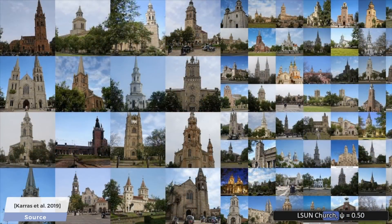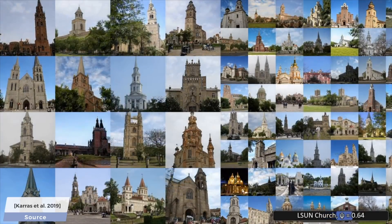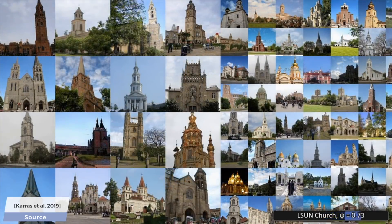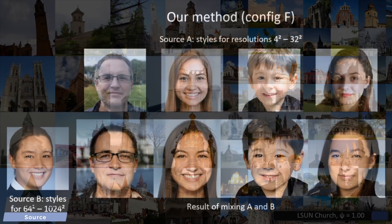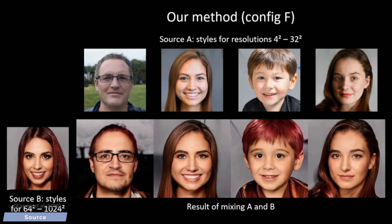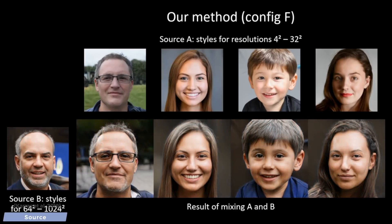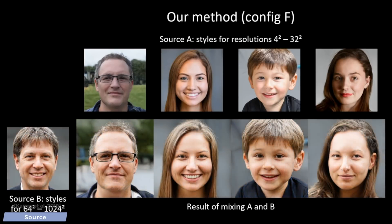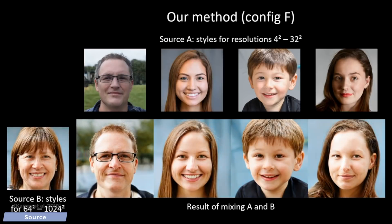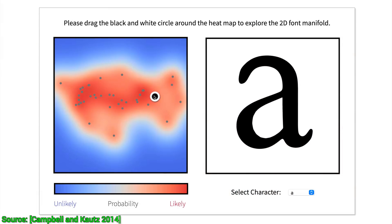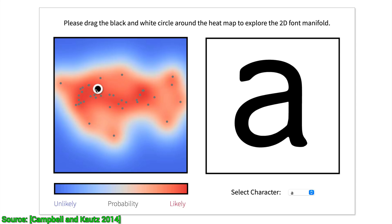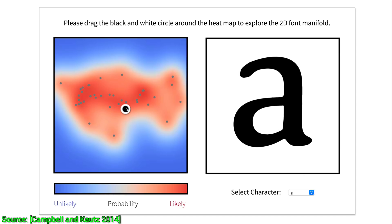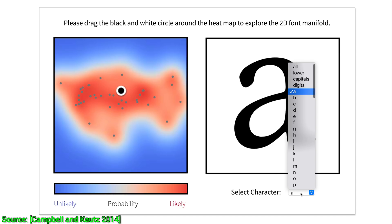An even cooler thing is that many of these techniques allow us to exert artistic control over these images. How do we control a neural network? It happens through exploring latent spaces. A latent space is a made-up place where we are trying to organize data in a way that similar things are close to each other.